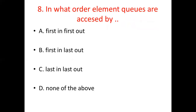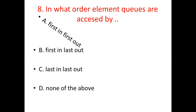Eighth bit: In what order are elements in queues accessed by dash? Option A, First in, First out. Option B, First in, Last out. Option C, Last in, Last out. Option D, None of the above. The answer is Option A, First in, First out.